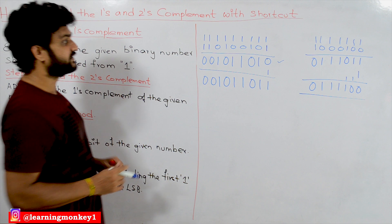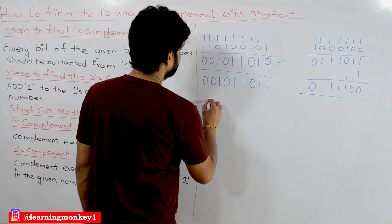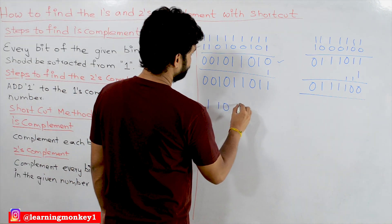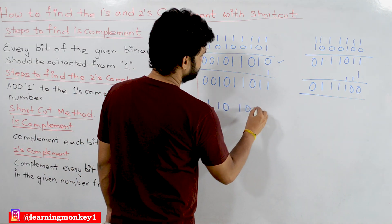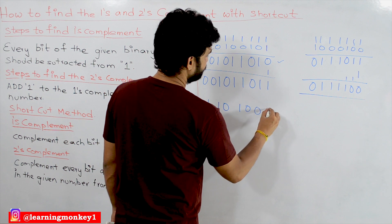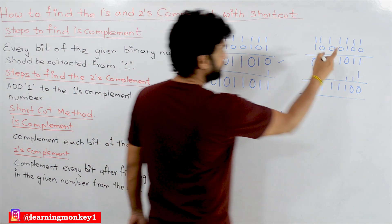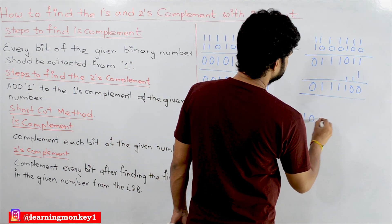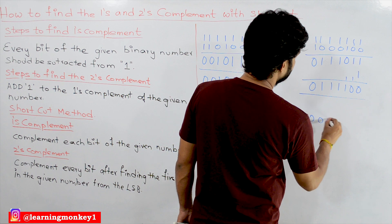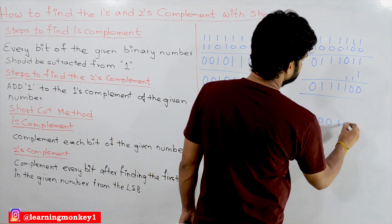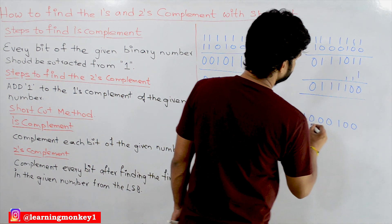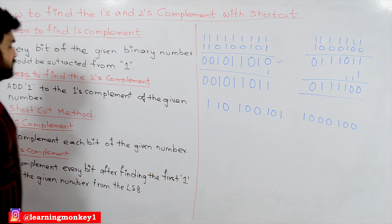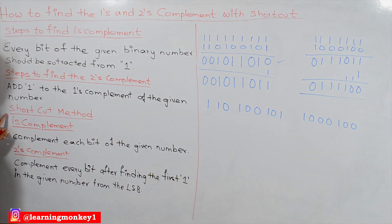The given numbers are: 1 1 0 1 0 0 1 0 1 and 1 0 0 1 0 0.